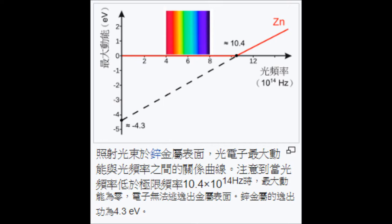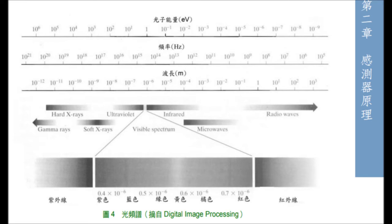However, if the light frequency is higher than the natural frequency of the metal, even if the power of the light is lower and lower, we can get some electrons from the metal. Finally, we choose the metal whose natural frequency is bigger than the purple color of the light.